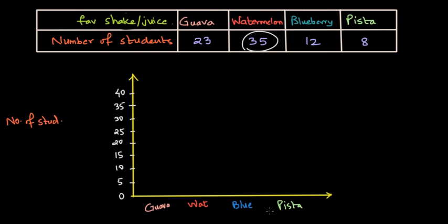And now we will have four bars, each one for guava, watermelon, blueberry, and pista. And the height corresponding to each of these shakes corresponds to the number of students that like that drink. And now let's plot the bar graph.